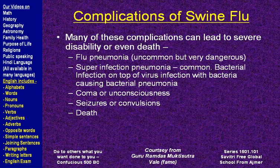The complications from swine flu include flu pneumonia, which can be very dangerous and kill the patient. There can also be superinfection pneumonia — where a patient was getting better and then worsens with increased cough and phlegm, indicating a new infection on top of the original. You must bring this to your doctor's attention so antibiotics can be prescribed. Flu can also cause loss of consciousness — coma — or convulsions and seizures, and can kill the patient.